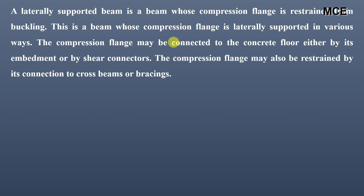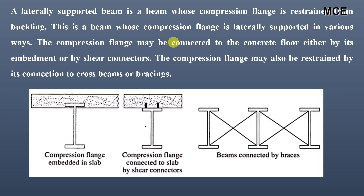Before moving to the solutions, we will first learn some important terms and definitions used to find the flexural strength of a beam. A laterally supported beam is a beam whose compression flange is restrained from buckling. The compression flange can be laterally supported by embedment in a concrete floor, by shear connectors, or by connection to cross beams or bracing. The figures shown illustrate these three cases of laterally supported beams.